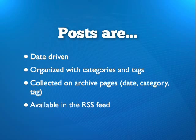Posts are primarily date driven. By default, when a post is displayed on a page, it will be displayed in descending date order. They're organized with categories and tags — when you create a post, you can put it into one or more categories and give it one or more tags. Those category and tag assignments will be collected on an archive page. There are several different kinds of archive pages: a date archive, a category archive, or a tag archive. On those archive pages, you will always see a collection of posts relevant for the date period, category, or tag selected. Posts also appear in your RSS feed.